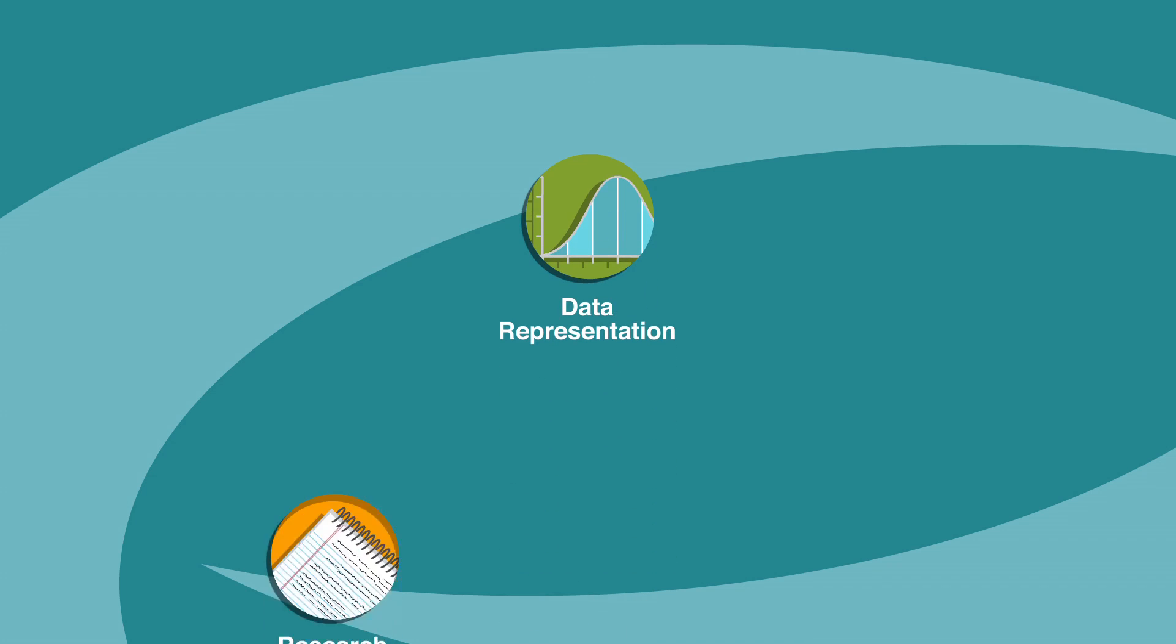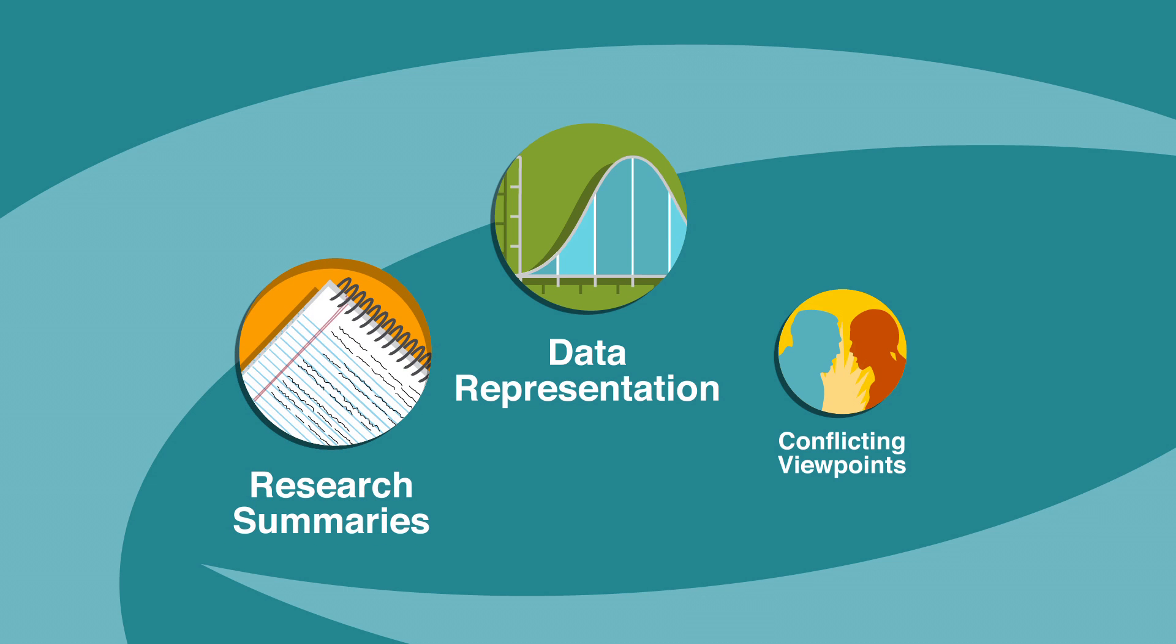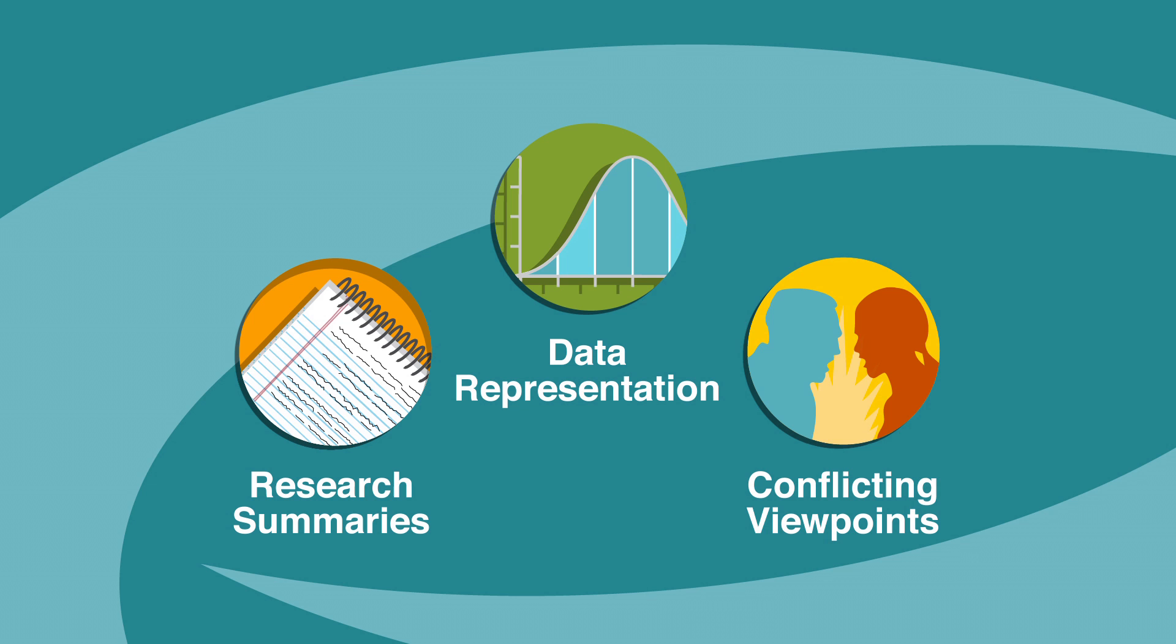You'll see three different types of science passages presented in no particular order. The three passage types are: one, data representation; two, research summaries; and three, conflicting viewpoints.